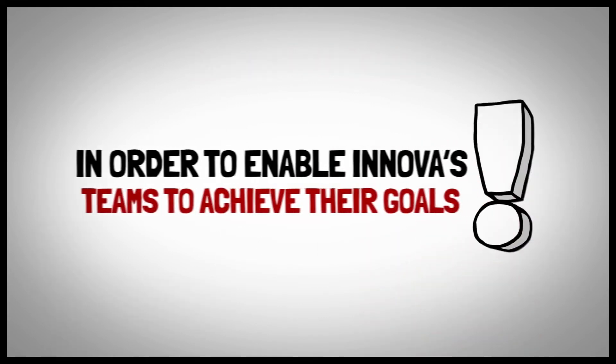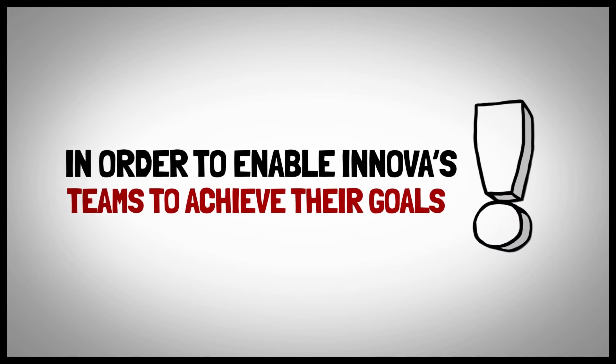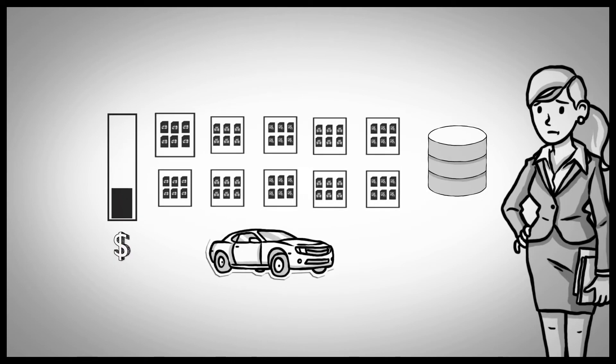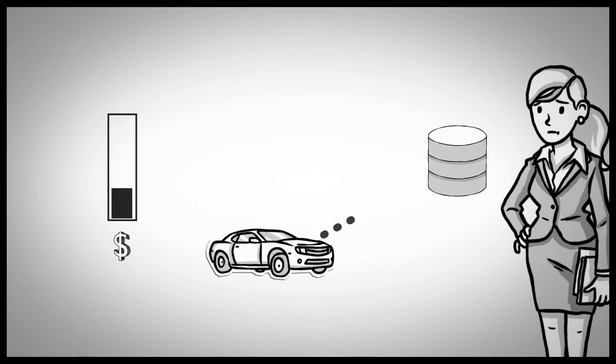In order to enable Innova's teams to achieve their goals, Emily needs to find cost-effective ways to send them large amounts of vehicle data in real time and to store the data after it's been collected.